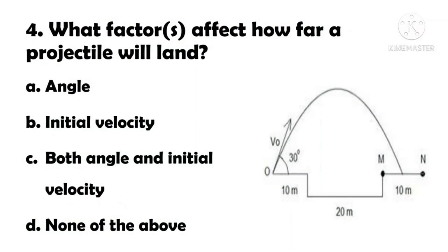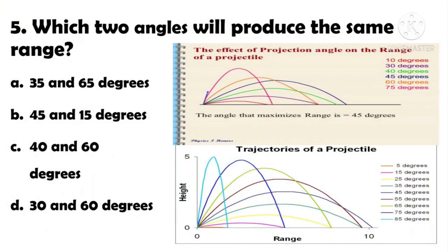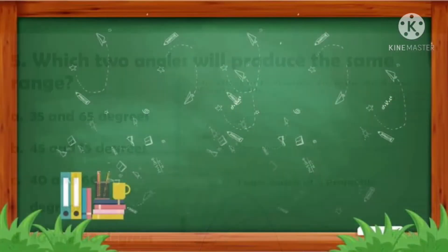Number 4: What factor or factors affect how far a projectile will land? A. Angle. B. Initial velocity. C. Both angle and initial velocity. D. None of the above. The answer is C. Correct. Number 5: Which two angles will produce the same range? A. 35 and 65 degrees. B. 45 and 15 degrees. C. 40 and 60 degrees. D. 30 and 60 degrees. The answer is D. Correct.